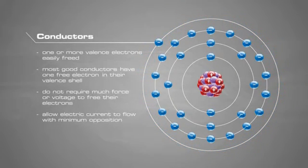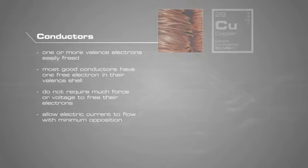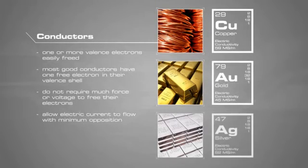The purpose of using conductors is to allow electric current to flow with minimum opposition or resistance. Copper has high conductivity. Gold and silver are also conductive, but they are more expensive and thus not practical in most applications.